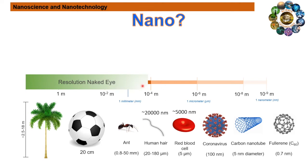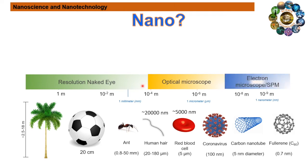We need to see objects below that scale using an optical microscope. Beyond that, we can only observe objects using high-resolution and expensive techniques like electron microscopy and scanning probe microscopy. These techniques will be discussed later in another topic.